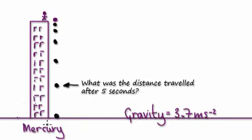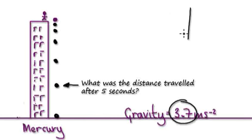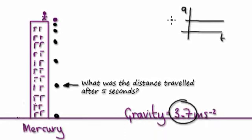Because we're on Mercury, this will be the acceleration. So our acceleration-time graph will look like this — a, t — and it will be 3.7. The acceleration is constant.